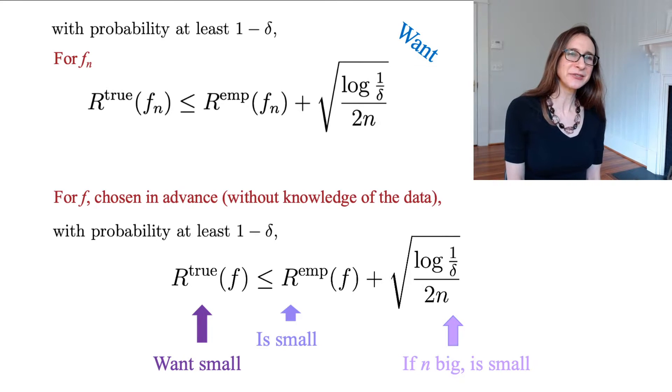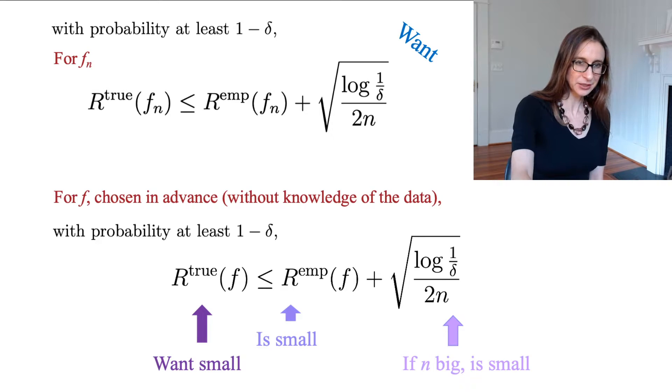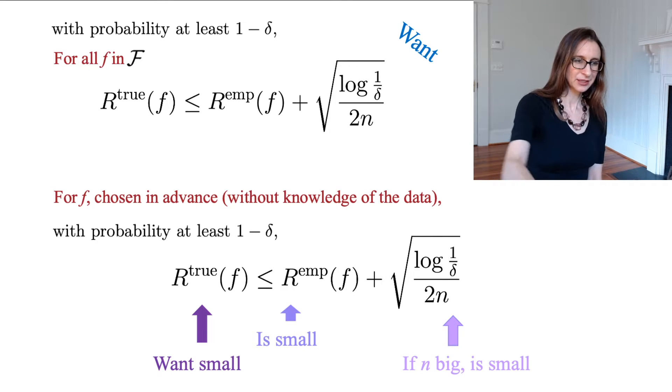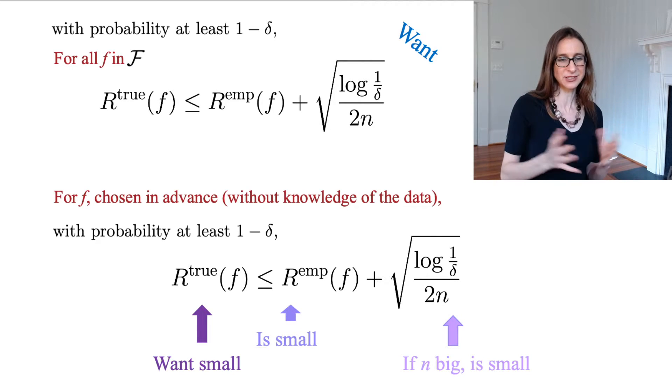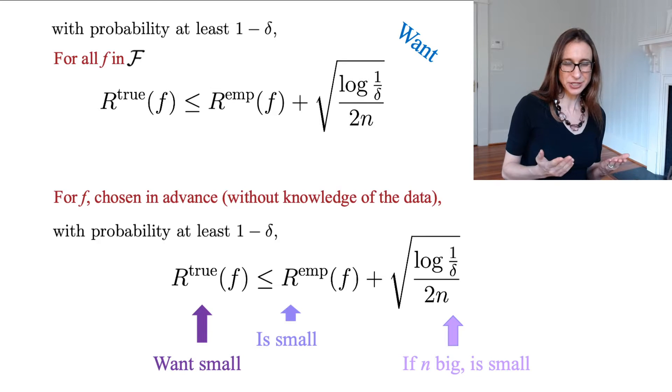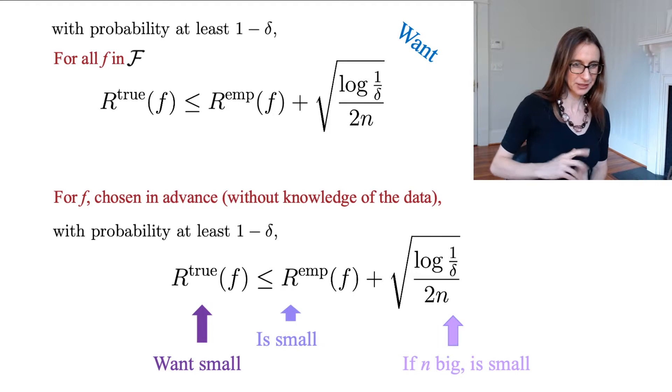So that's what we want. We're going to achieve that kind of in a circular way. And in particular, we're going to bound the difference between the empirical risk and the true risk for all functions in the whole class, so that it doesn't even matter which function our algorithm is going to pick. For any function the algorithm is going to pick, we'll get this kind of guarantee on the true risk.